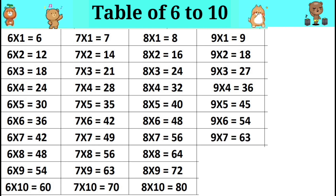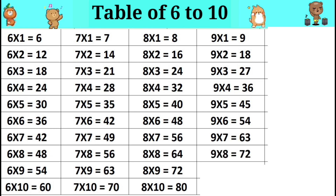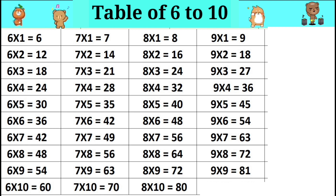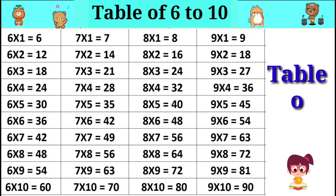Nine sevens are 63. Nine eights are 72. Nine nines are 81. Nine tens are 90.